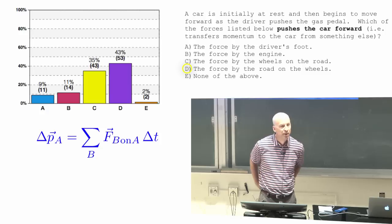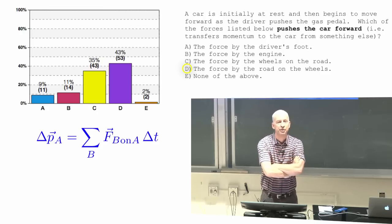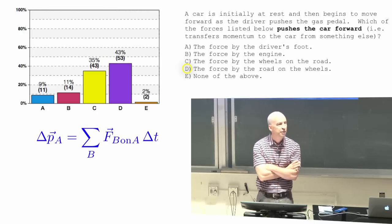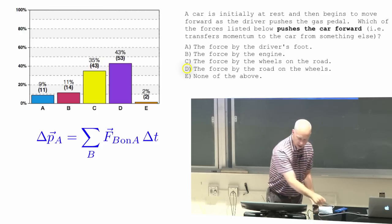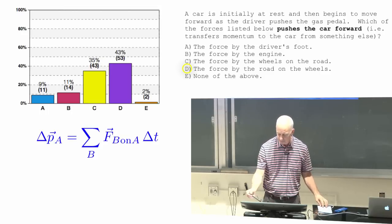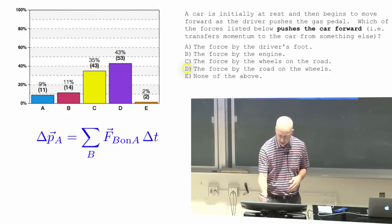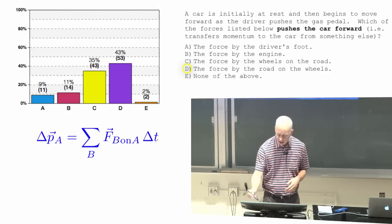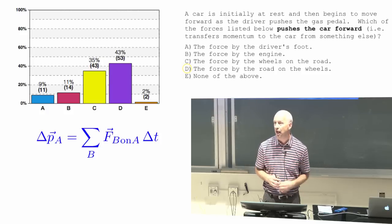Because they don't slip, it means there's a friction force that's pushing and stopping the wheels from slipping. It's a friction force by the road that pushes the car forward. I didn't expect you to come up with friction force necessarily. But force on the wheels is a force on the car. And this is the only one. D is the only one that's a force on the car and comes from something outside the car.